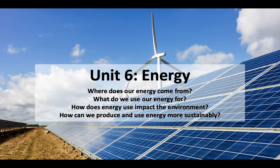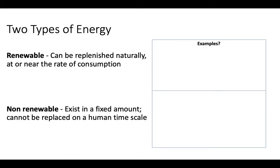To start off, I'm going to introduce some basic topics and trends in energy usage today. There are two types of energy we'll be talking about: renewable and non-renewable. Renewable means it can be replenished naturally at the rate of consumption — things that replace themselves as we use them. Non-renewable resources exist in a fixed amount; they cannot be replaced at all, or on a scale comparable to human lifespan, so they will run out. Renewable ones recharge; non-renewable do not.